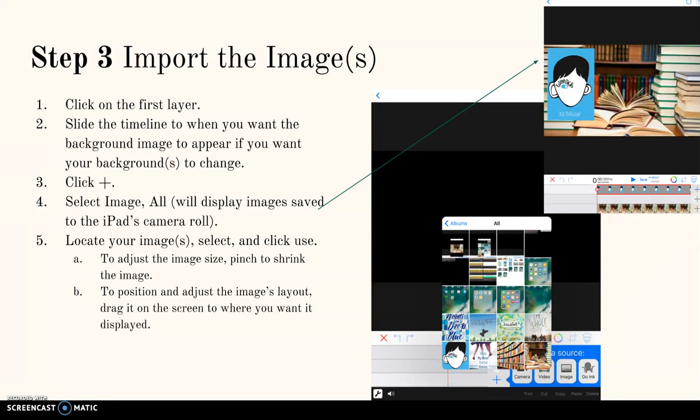To adjust the image size, pinch the screen to shrink the image. To position and adjust the image's layout, drag it on the screen to where you would like it displayed. If you want your images to change, click on layer 1, slide the timeline to where the image will change, and click trim. Then repeat this step if you want additional images.